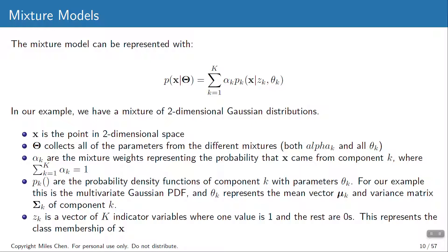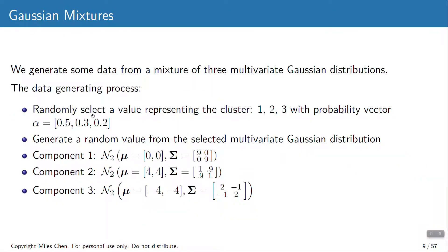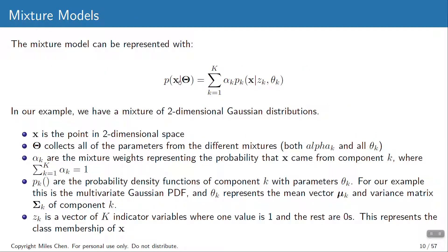This is how we represent the PDF of the mixture. You have a value x — a point in two-dimensional space — and a super-parameter theta that collects all parameters from all the different mixtures: the mixture parameter alpha (proportions of each component), and each component's mean vector and variance matrix. We have three mean vectors and three variance matrices — seven parameters, each containing multiple values. The probability of getting any value is a mixture: we weight the PDF of each component by its alpha, and sum them. That gives the total probability of a point at any given location.